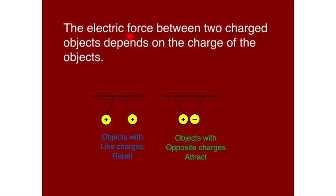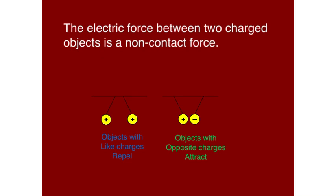The electric force between two charged objects depends on the charge of the objects. If we have two objects with like charges, there's going to be a force of repulsion between them. And if we have two objects with opposite charges, there's going to be a force of attraction between them. The electric force does not have to touch the objects — it is a non-contact force. It can exert a force without touching the objects.